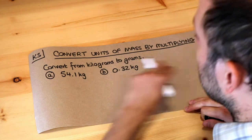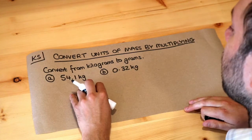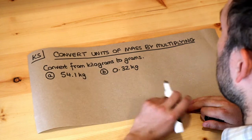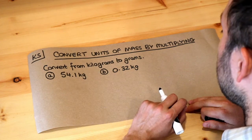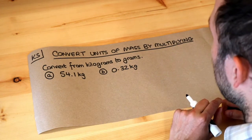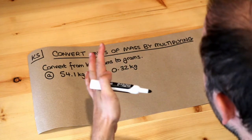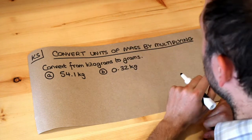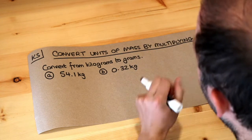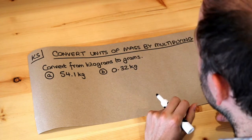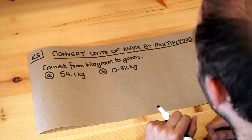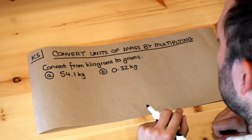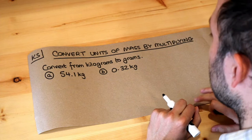Hello and welcome to this Dr. Ross key skill video on converting units of mass by multiplying. In case you don't know what mass is, mass is just how much matter something consists of. It's often confused with weight — how heavy something is — and certainly weight and mass are related, but there's a subtle distinction between them which I'm not going to go into now.